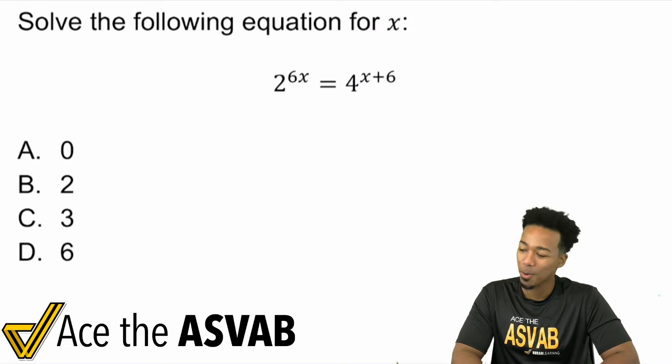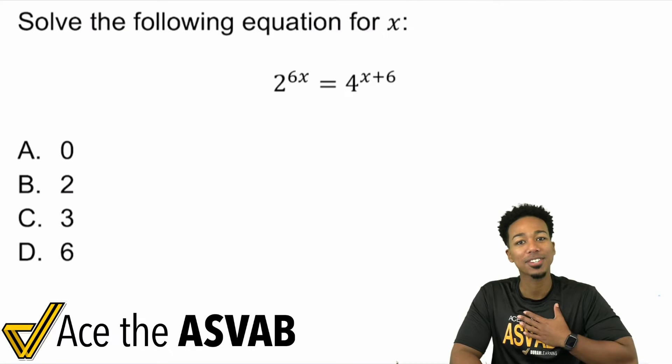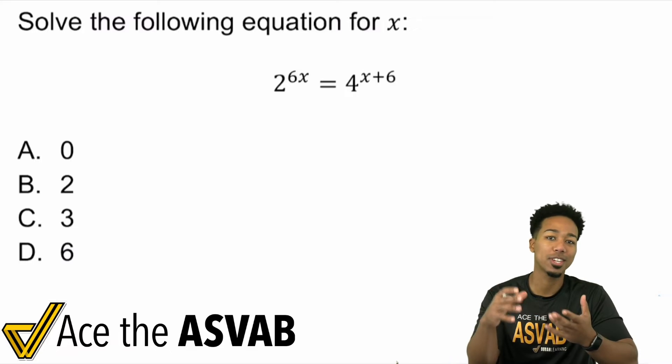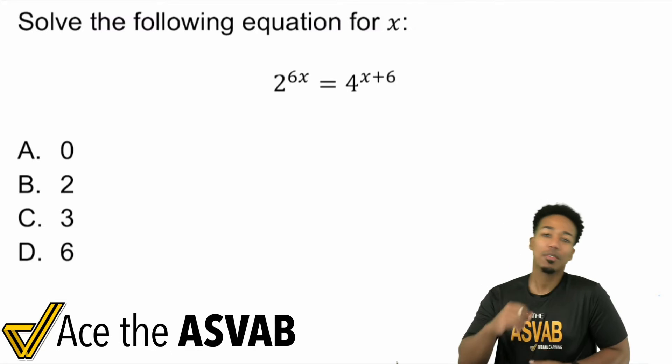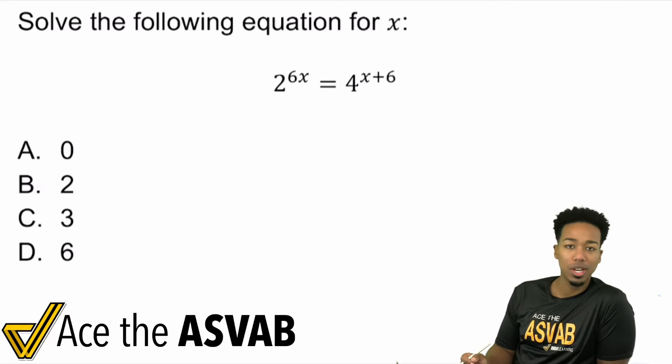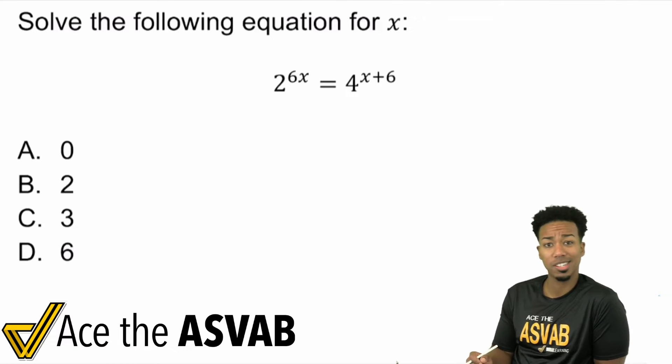What's going on, my ASVAB people? I hope you're having a good day so far. I'm Coach Anderson, and I'm here to lead the way for you to help you understand this just a little more. So we have ourselves an exponential equation where we have 2 to the power of 6x equals 4 to the power of x plus 6.